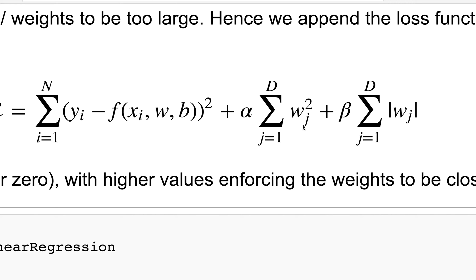A good example: if you take cancer datasets and you try to classify whether a patient's got cancer or not, what will happen is that the weights will always be non-zero — it will weight all the genes as being at least slightly significant. Because one, you don't have enough data to confirm your hypothesis, and two, there are just so many correlated variables that some of them will become non-zero for no particular reason, just noise. So what we want to do is penalize those weights and try to drive them to zero.